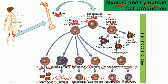The lymphoid progenitor cell produces B lymphocytes, T lymphocytes, and natural killer cells. They are produced in the bone marrow, but T lymphocytes mature in the thymus — which is why they are called T lymphocytes.